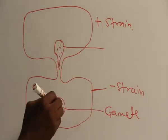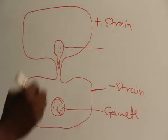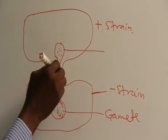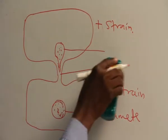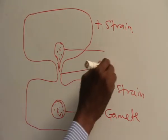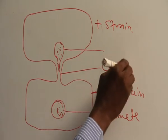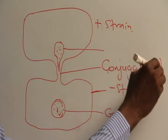Now this one will move in to meet with this one through the conjugating tube. This is what we call conjugating tube.